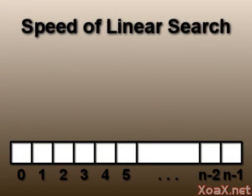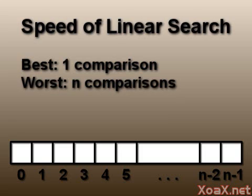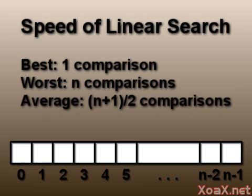So how fast is the linear search? In the best case, we could find the target at the first index and would only need one comparison. In the worst case, the element could be at the end of the array and would require n comparisons if the array is of length n. Assuming the target has an equally likely chance of being at any index, the average number of tests performed will be (n + 1) / 2. Generally, we will be most concerned with how an algorithm performs on average.